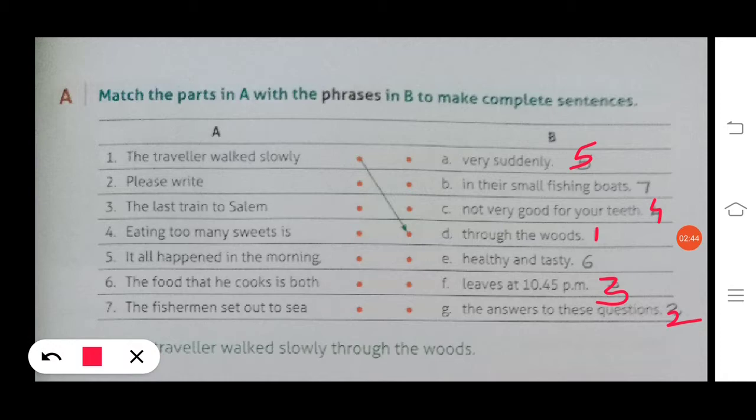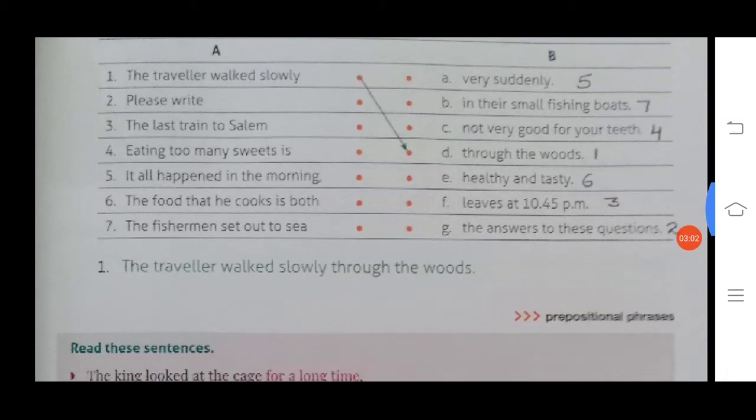Number five: it all happened in the morning very suddenly, that is A. Number six: the food that he cooks is both healthy and tasty, matched with E. Number seven: the fishermen set out to sea in their small fishing boats, matched with B. After doing the matching, the full sentence has been written, like the example: the traveler walked slowly through the woods.